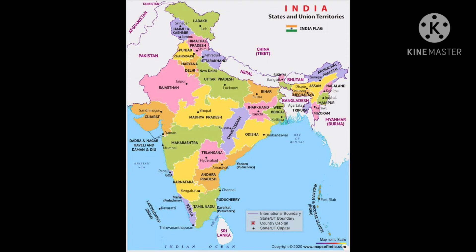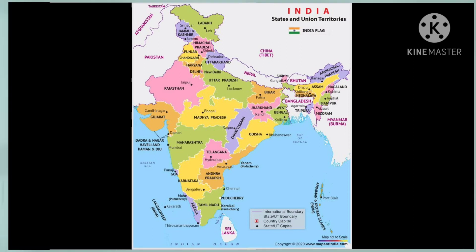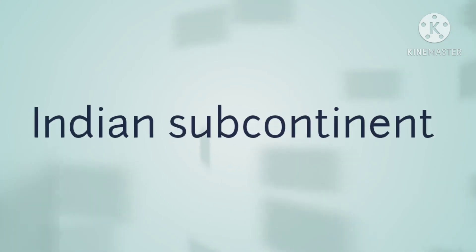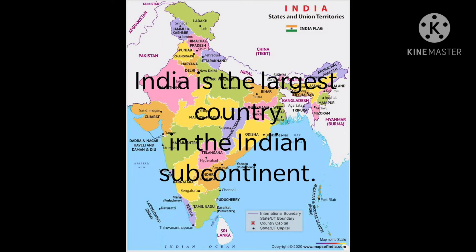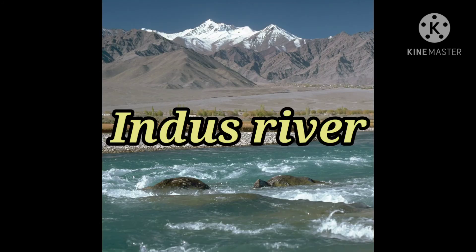India and its neighbors Pakistan, Bhutan and Nepal are together known as the Indian subcontinent. India is the largest country in the Indian subcontinent. The name of India is derived from the river Indus, which flows through the northwest of India.